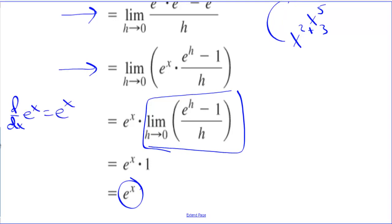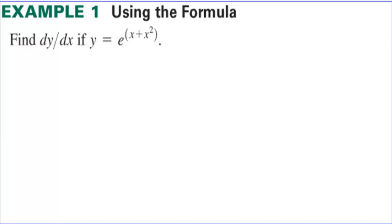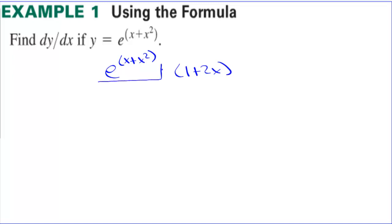Pretty simple and straightforward. Using the formula, find the derivative of e to the x plus x squared. The derivative is e to the x plus x squared times 1 plus 2x — there's the derivative of the inside. The outside is e to the x, whose derivative is itself, and then you multiply by the derivative of the inside.